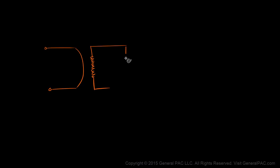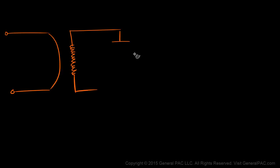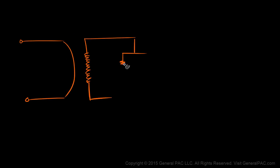To begin, we're going to draw two windings — here's our primary winding and here is our secondary winding. Right after the secondary winding, we're going to draw what we call a magnetization branch. In our magnetization branch, we have a resistor which we're going to call RC, and then we have a reactance which we're going to call ZE, connected in parallel.